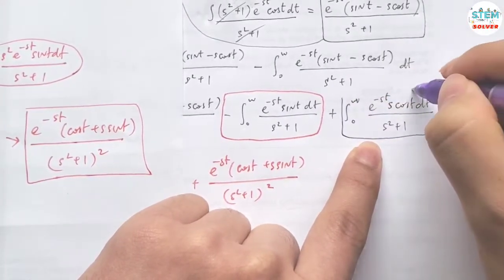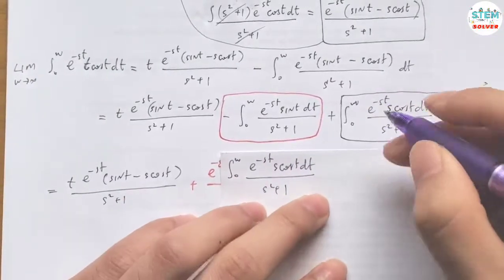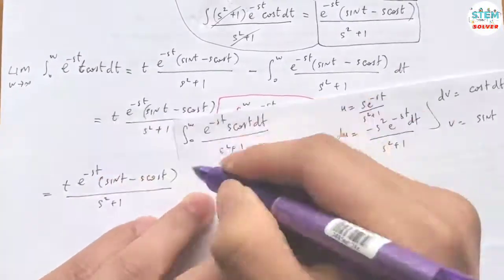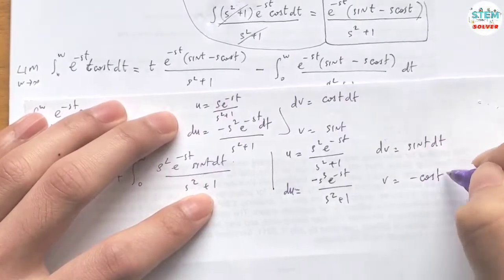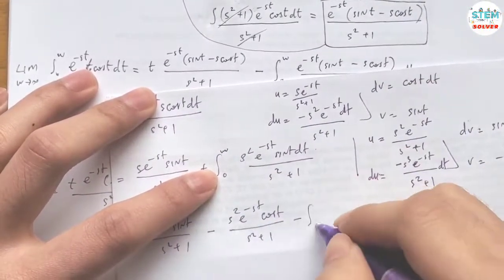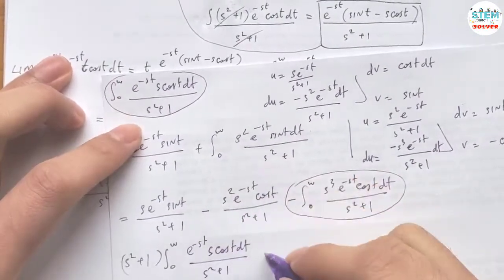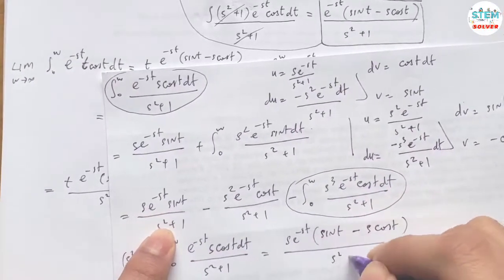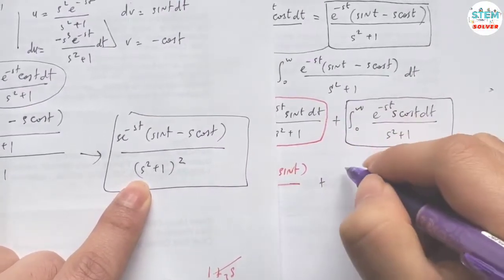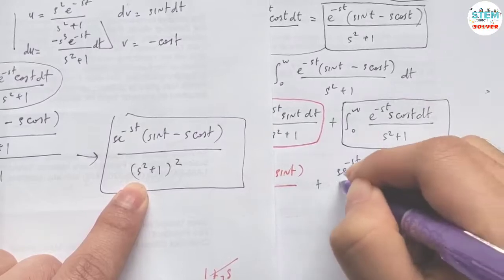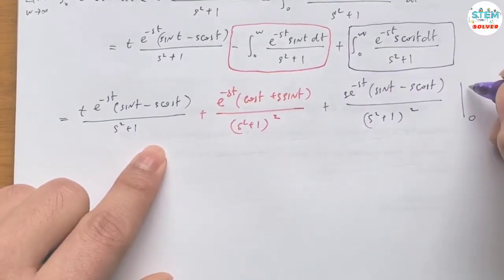Now we replace those integrals with the expressions we derived. For the cosine integral we get e^(-st)·(cos(t) + s·sin(t)) / (s² + 1)², and for the sine integral we get s·e^(-st)·(sin(t) - s·cos(t)) / (s² + 1)². We then evaluate from 0 to w.